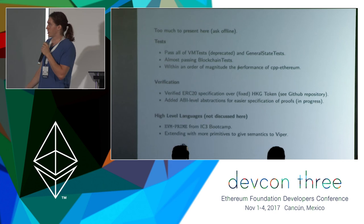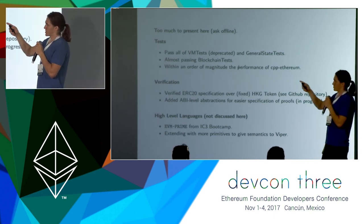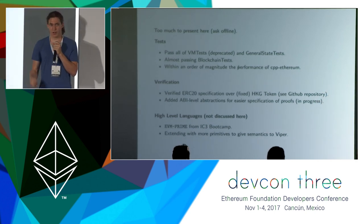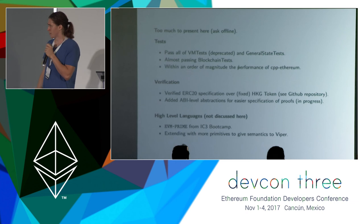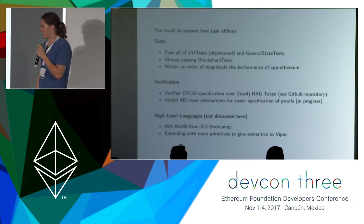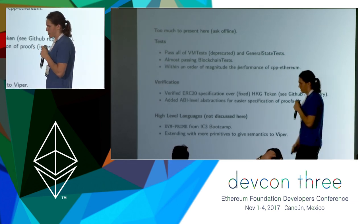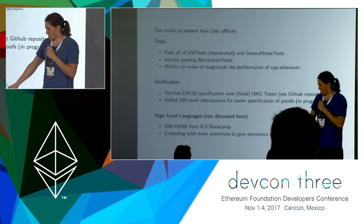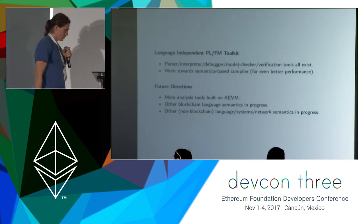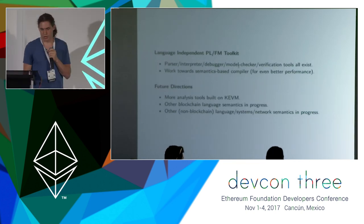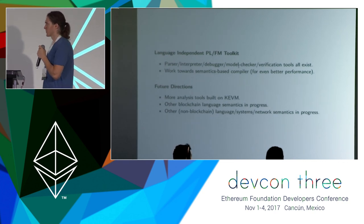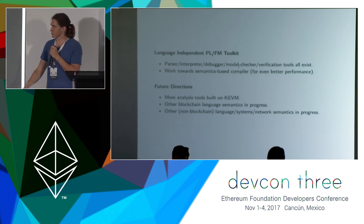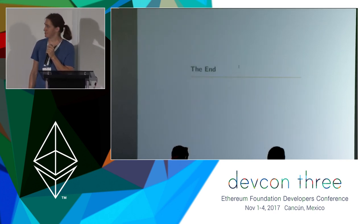We're almost passing all blockchain tests with an order of magnitude better performance than CPP Ethereum, which is pretty good for a formal verification framework. We're working on some ABI extraction stuff. Not discussed here but come ask me about it — EVM Prime, which was the IC3 boot camp project: we're extending EVM with some features to make it easier to give semantics to Viper via compilation to EVM, and we're getting pretty close on that. So this is the K framework overview — it's not just for blockchain languages. And that's the end.